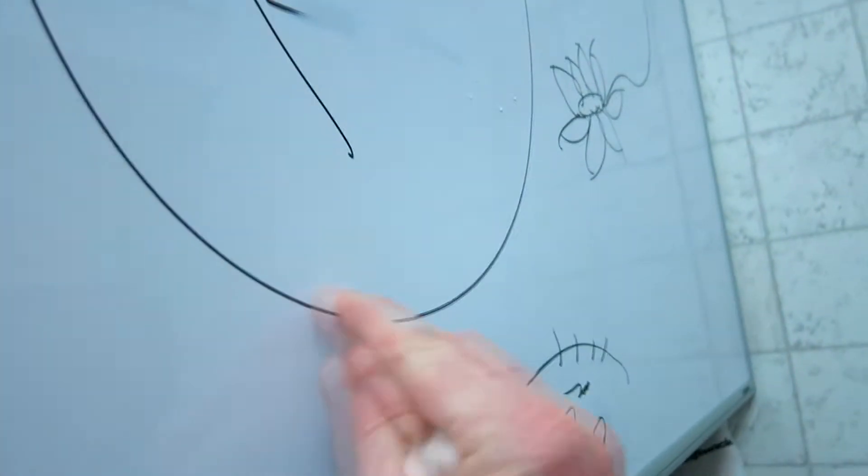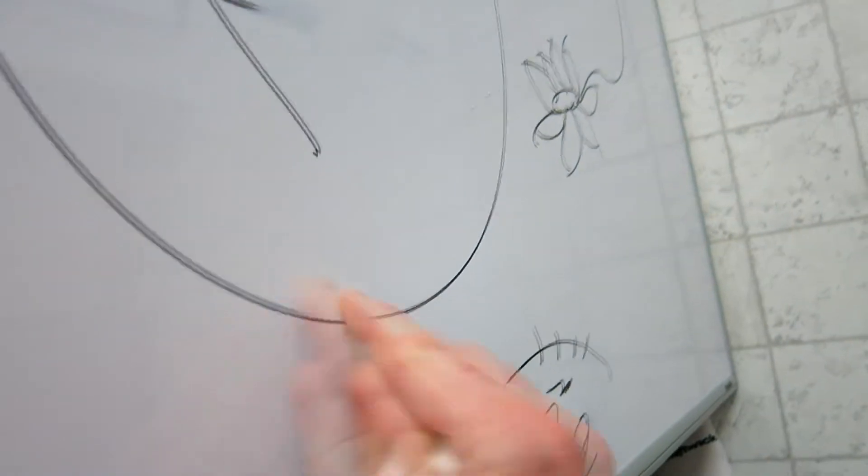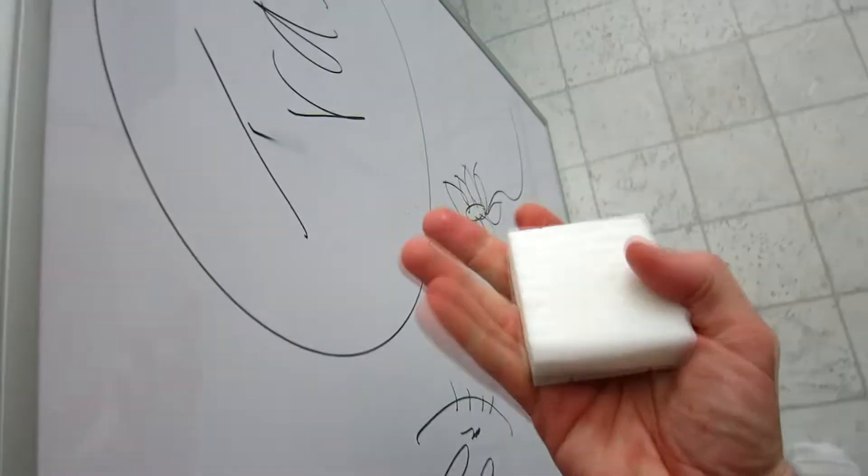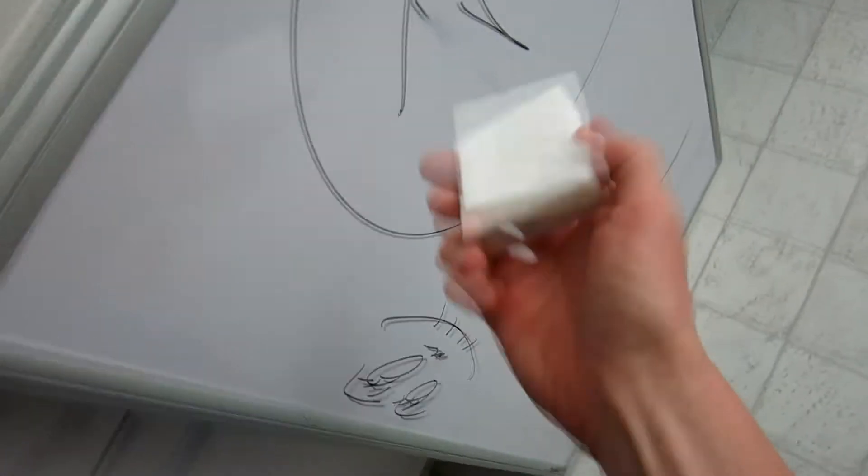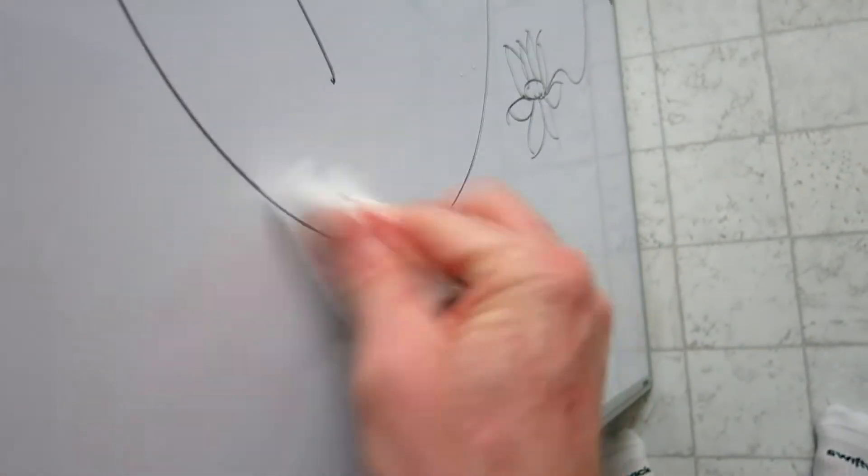Check this out, so let me show you. This is black permanent marker. With my finger, this is not coming off at all. But with the Magic Eraser, what we're gonna do is literally, again, the damp side here, we're